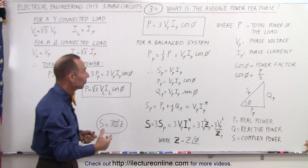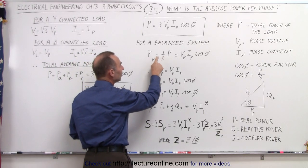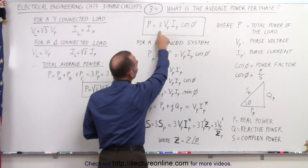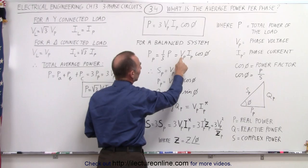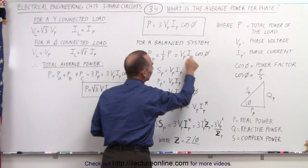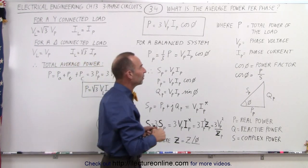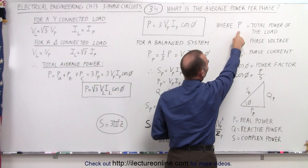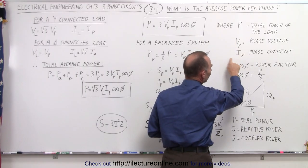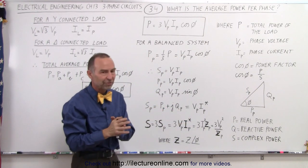For a balanced system, we can say that the power for a single phase is equal to one-third the total power. Therefore, we take the total power equation and divide by three, and we get the phase voltage times the phase current times the cosine of phi, the phase angle. So, P is the total power of the load, V is the phase voltage, I-sub-P is the phase current, and the cosine of phi is what we call the power factor.